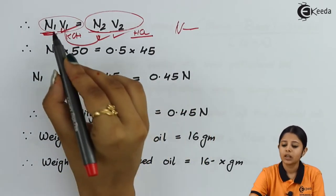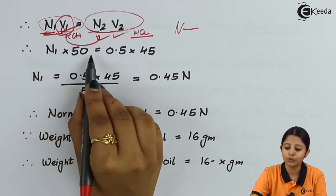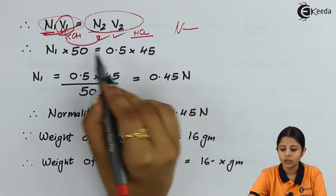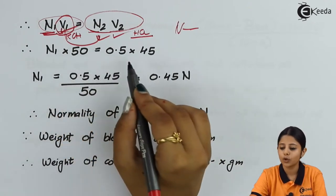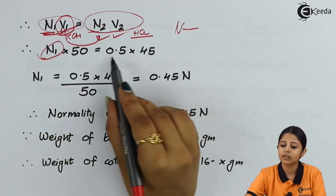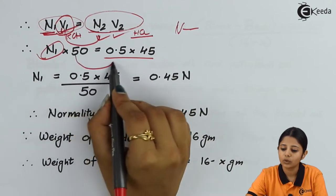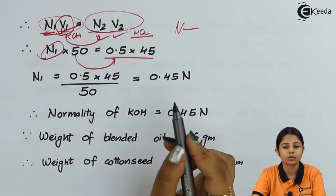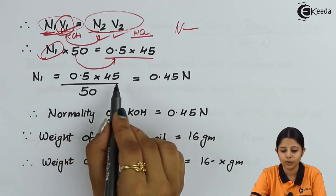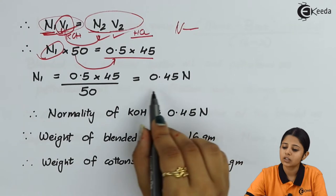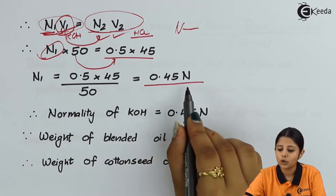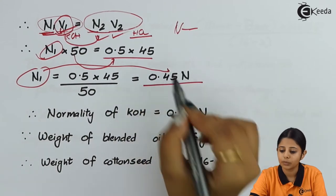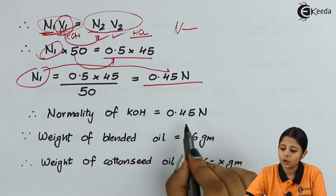Substituting the values: N1 × 50 = 0.5 × 45. Therefore N1 = (0.5 × 45) / 50. Multiplying 45 by 0.5 and dividing by 50 gives N1 = 0.45 normal. This 0.45 normal is nothing but the normality of KOH. So normality of KOH is 0.45 normal.